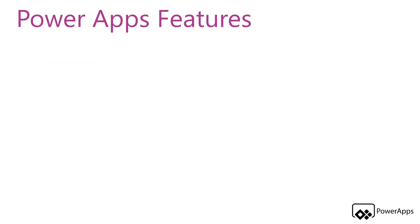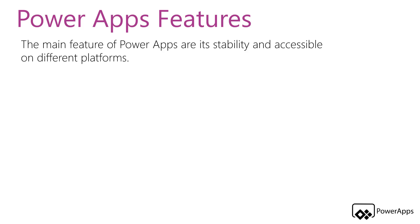There are many benefits of implementing the Power Apps platform into your business. The main feature of using Microsoft Power Apps is its stable functionalities, integration, and accessibility on multiple platforms including iOS, Android, and Windows devices, so each app developer can work on his preferred environment. Using Power Apps helps you create responsive design that is suitable for browsing from web or mobile, with a responsive layout that looks good on all devices. This means that apps will render themselves according to whatever device you use.